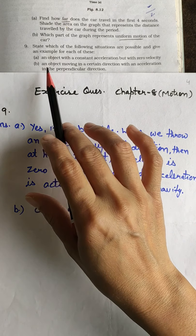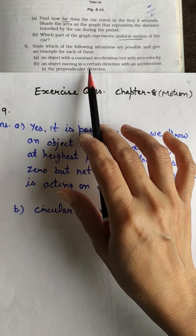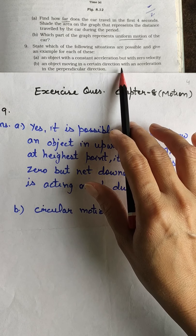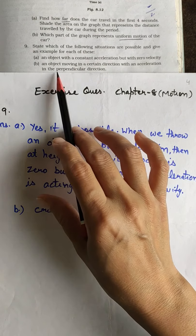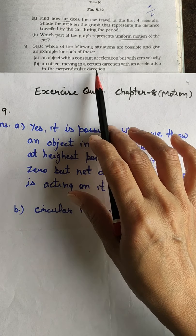Let us discuss part B. An object moving in a certain direction - we have to tell whether this situation is possible or not with an acceleration in perpendicular direction.